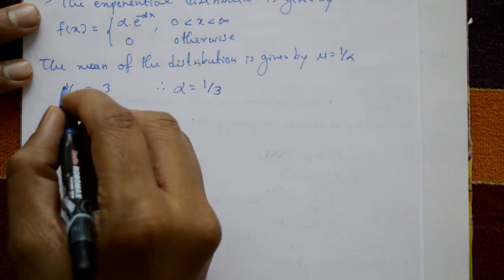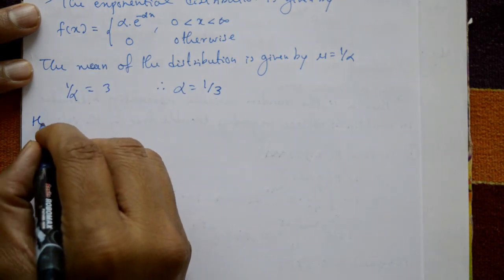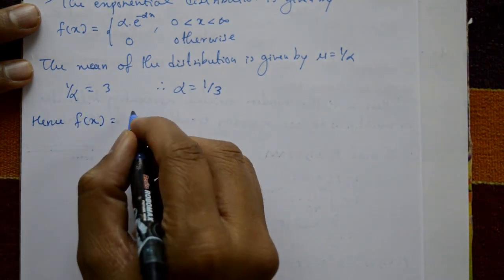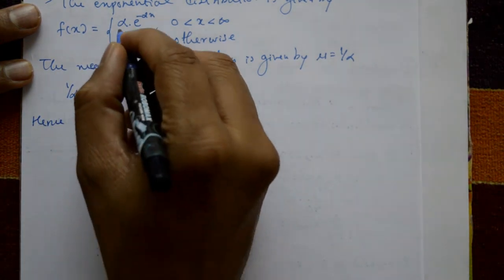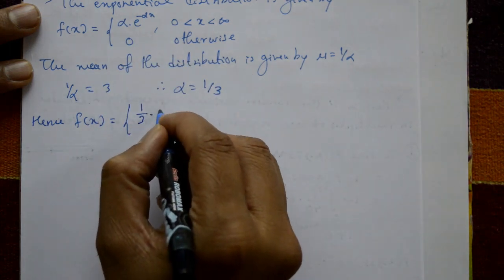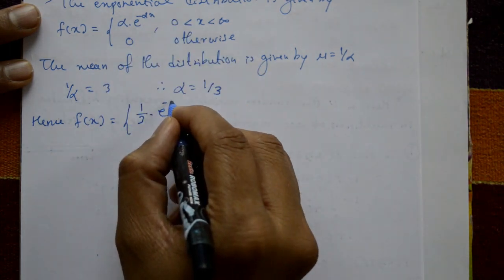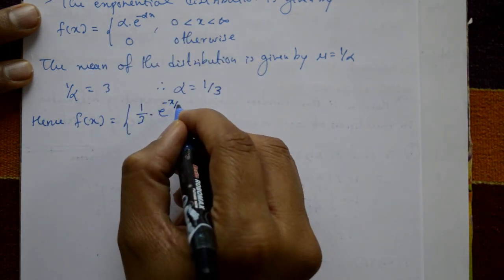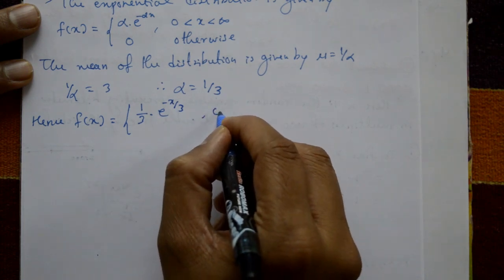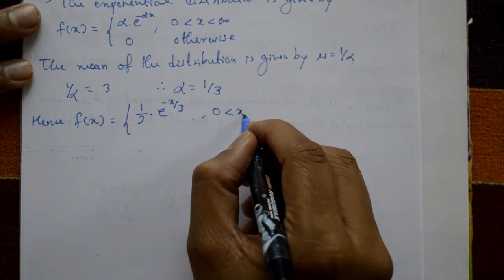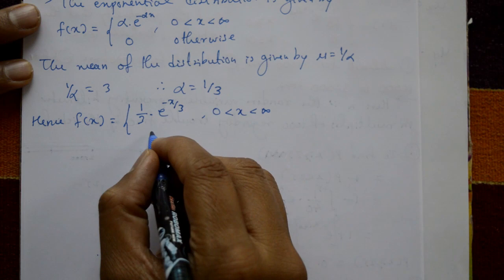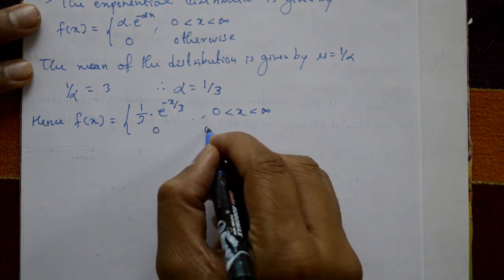Hence the PDF becomes f(x) = (1/3) · e^(−x/3), for 0 < x < infinity, and zero otherwise.